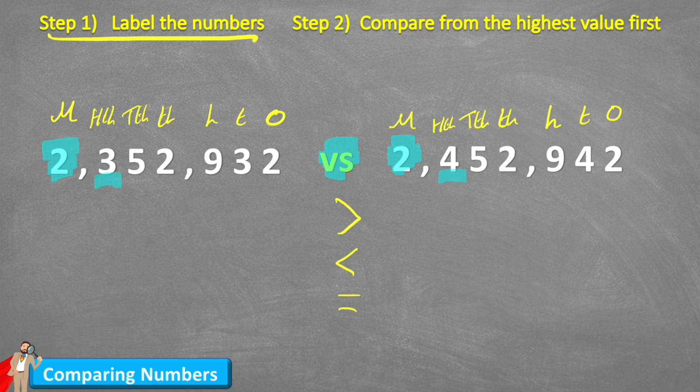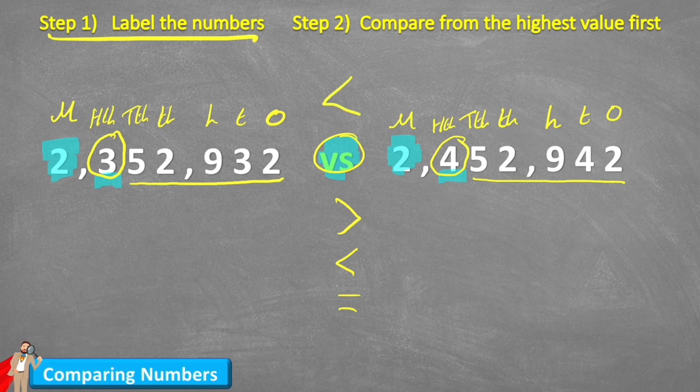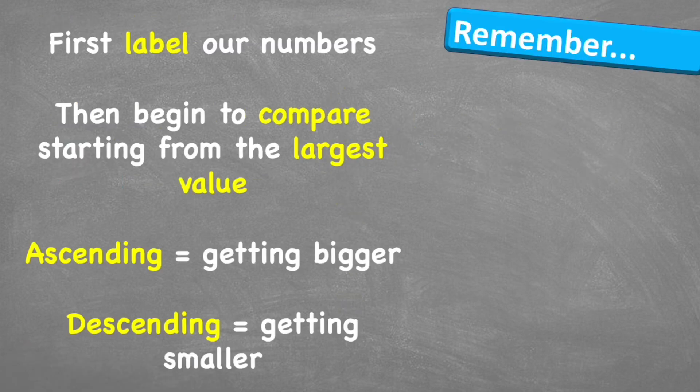Which one has the greater value? So in order to compare them, I'm going to decide which one is larger, which one is smaller. And obviously the three has a smaller value. So again, it doesn't matter what happens after the three. This number will always be smaller than this number because the four has a greater value in the hundred thousands column. Therefore, my versus sign here is going to be swapped to a less than symbol. 2,352,932 is less than 2,452,942. And there we go.